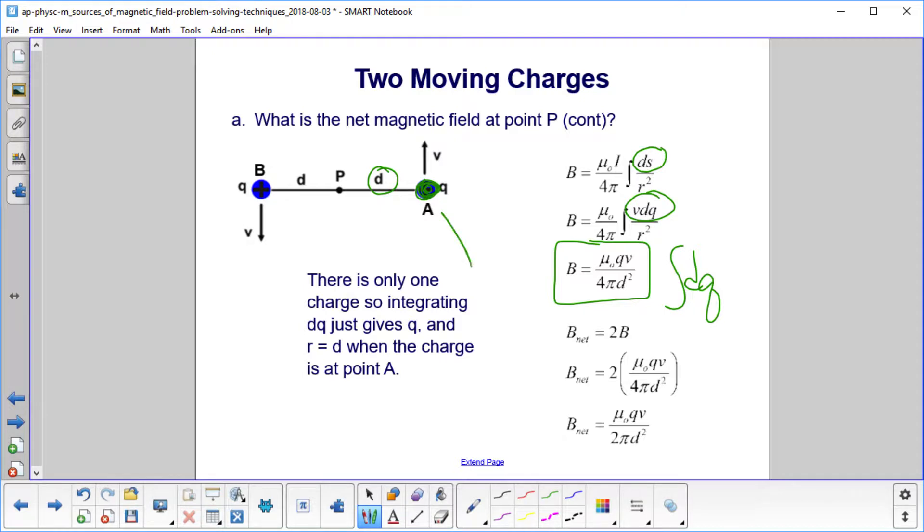Now that's due just to this charge. We said that the magnetic field due to the charge at point B is the same. And it's even in the same direction. So we just add them, or we double the magnetic field that we found here. And then we get the net magnetic field is mu zero QV over 2 pi d squared.